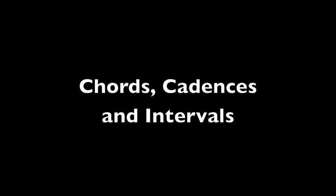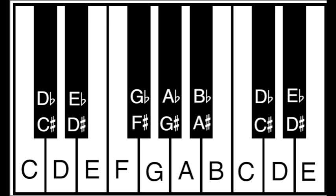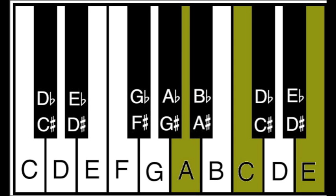Now let's look at chords, cadences and intervals. A chord is a collection of notes played at the same time. To keep it simple, let's talk about three notes being played at the same time. Here is the chord of A minor. It's minor because it sounds minor, and it's A because the bottom note, or the root note of this chord, is A.